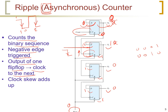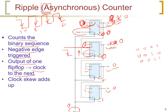At the third count pulse, the first flip-flop toggles back to 1, and since its output goes from 0 to 1, no change occurs in the other flip-flops. The count becomes 0, 0, 1, 1. At the fourth count pulse, the first flip-flop changes from 1 to 0, triggering the second flip-flop from 1 to 0, which in turn triggers the third flip-flop to become 1. So the count advances from 3 to 4, and we continue in this manner.